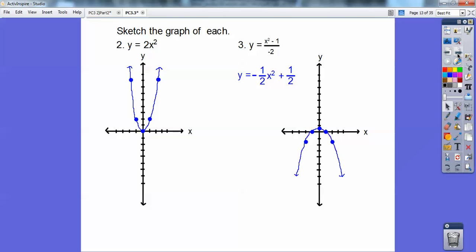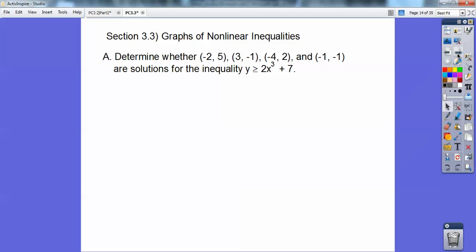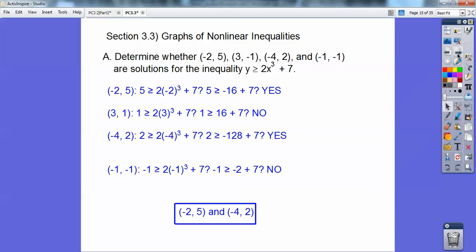Okay, so you're going to go ahead and graph that. And there you go. All right, so graph the nonlinear inequalities. So determine whether these ordered pairs are a solution to the inequality y is greater than or equal to 2x cubed plus 7. So you're just going to plug in all those x's and y's for each one of those. And you're going to find out only negative 2, 5 and negative 4, 2 satisfy that.